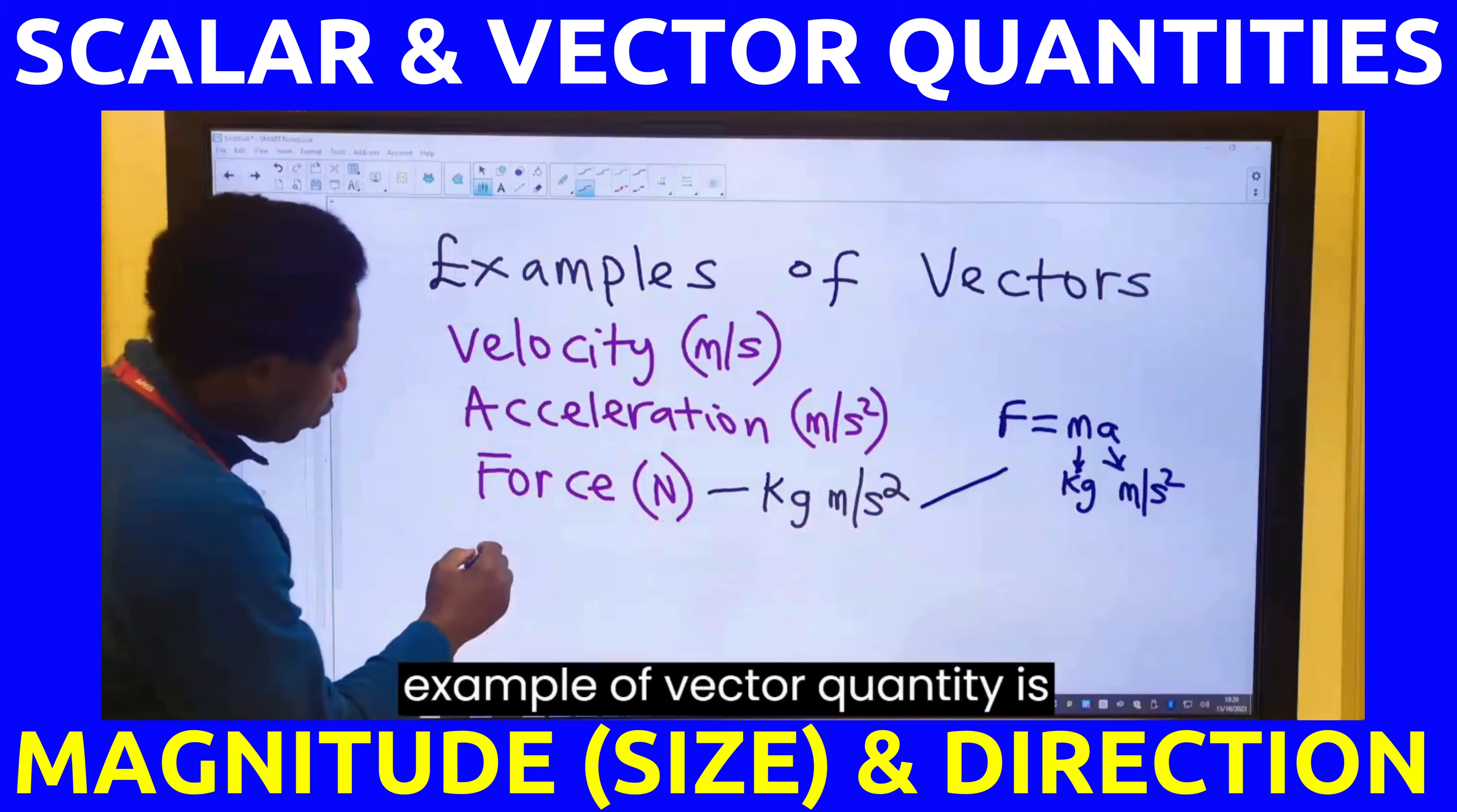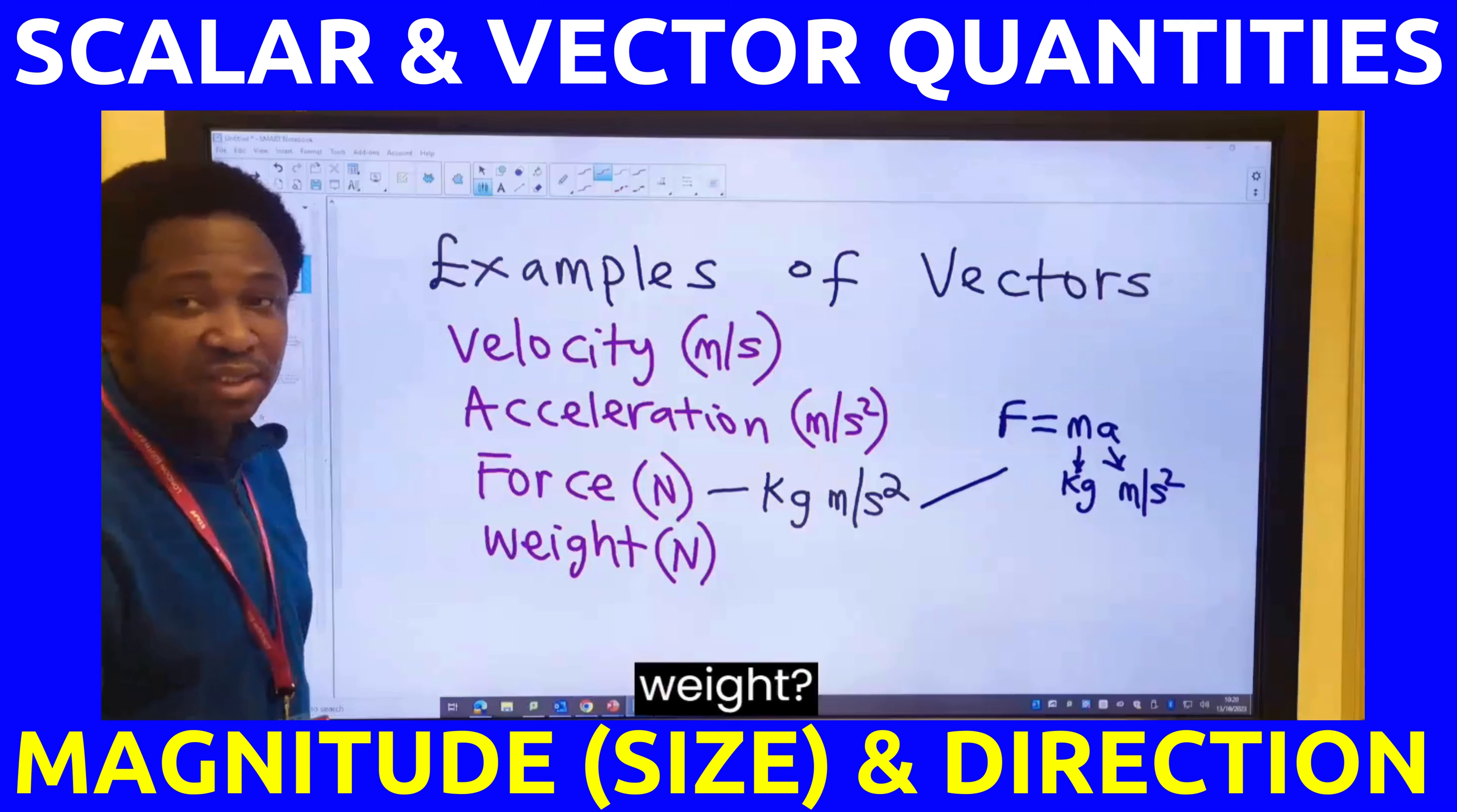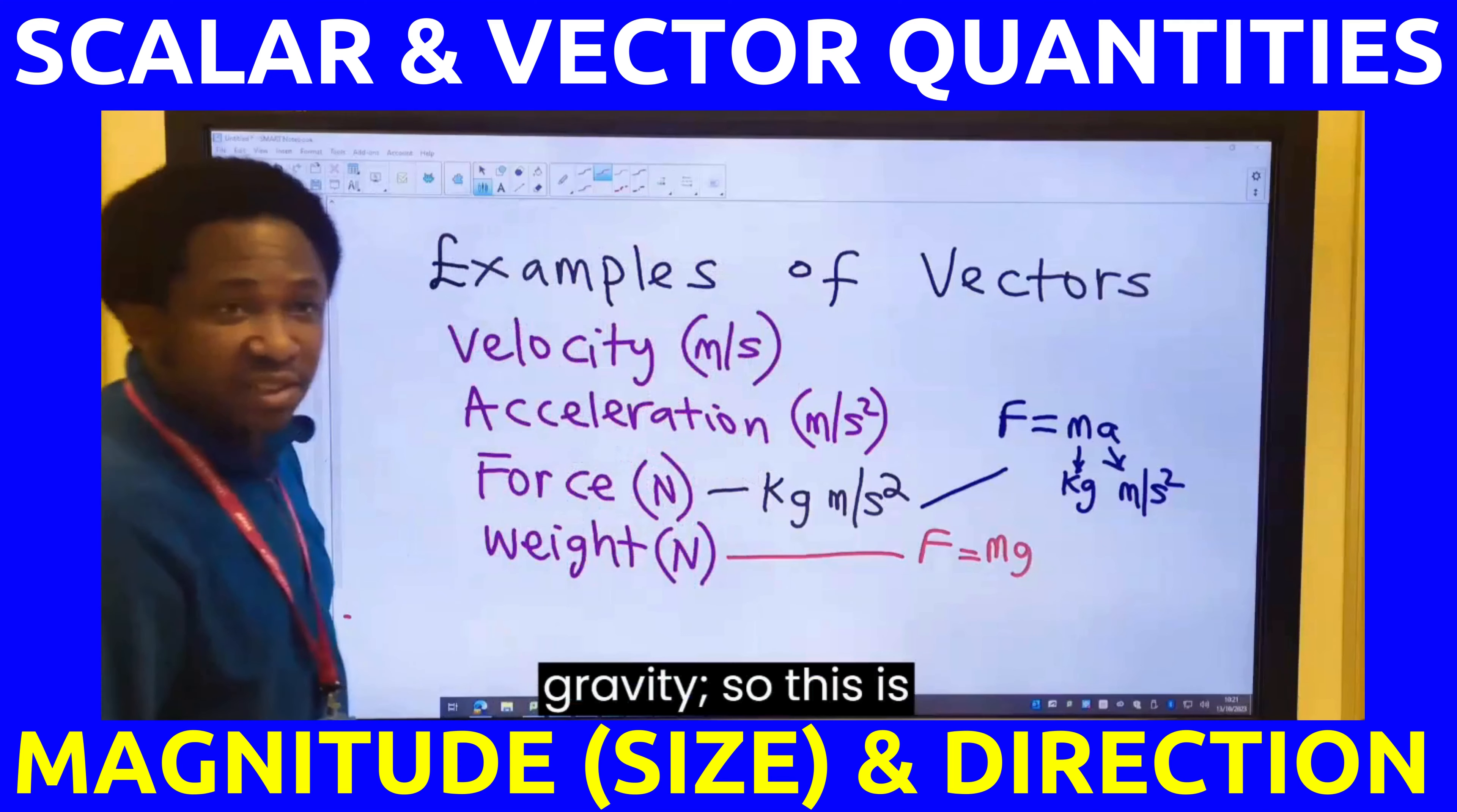Another example of vector quantity is weight. Weight is also in newton. Force is in newton. Weight is in newton. What is the difference between force and weight? Force is mass times g, gravity.